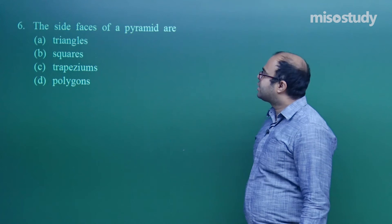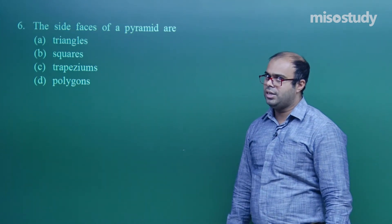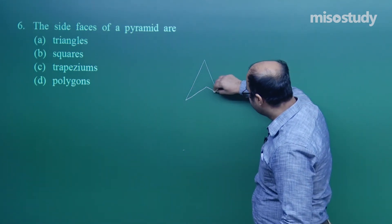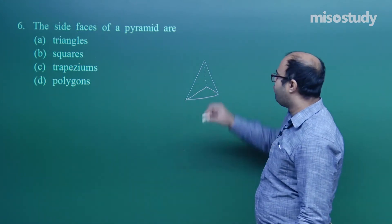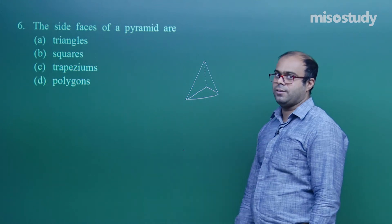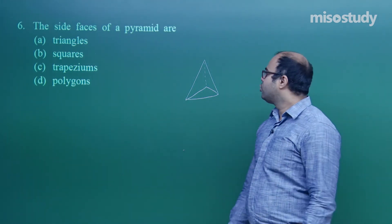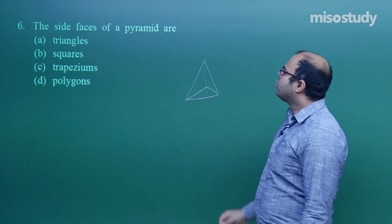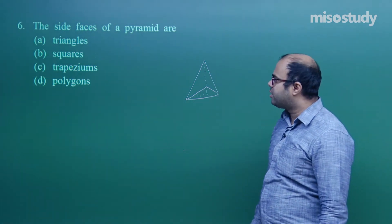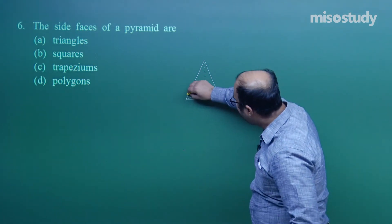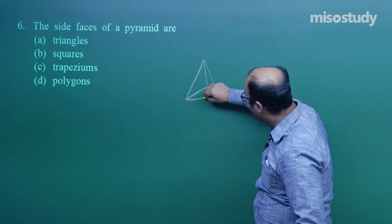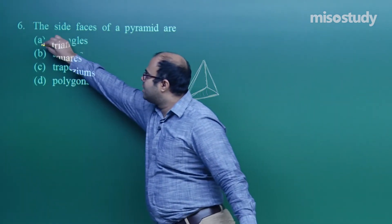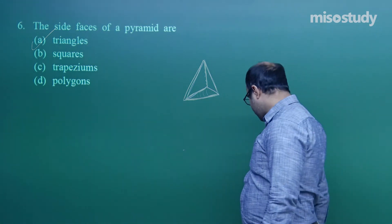Question six: the side faces of a pyramid are which shape? A pyramid has four faces — a base and three other side faces, making four total. The side faces are all triangles. Each lateral face is a triangle, including the back side. So the side faces of a pyramid are triangles.